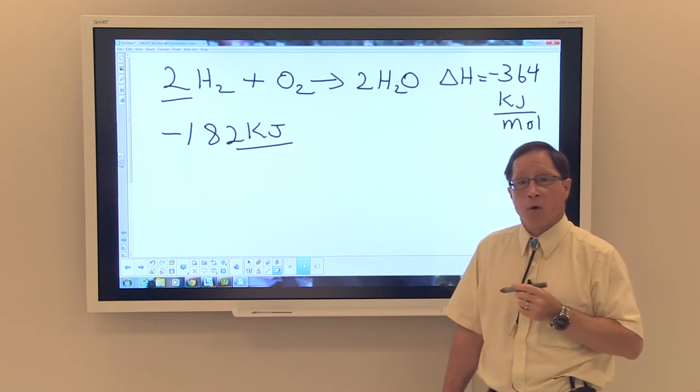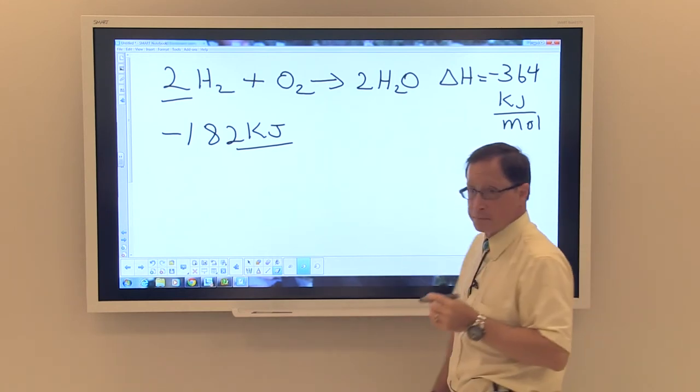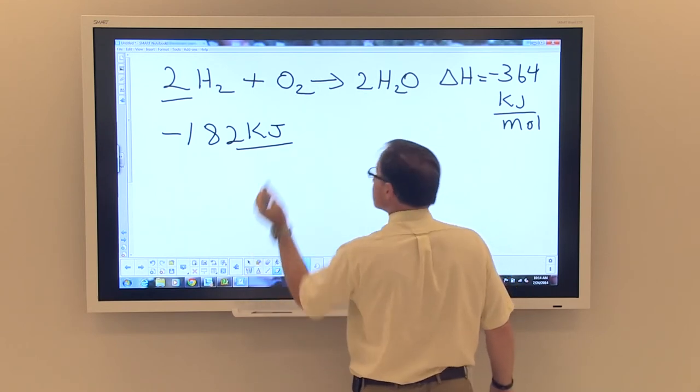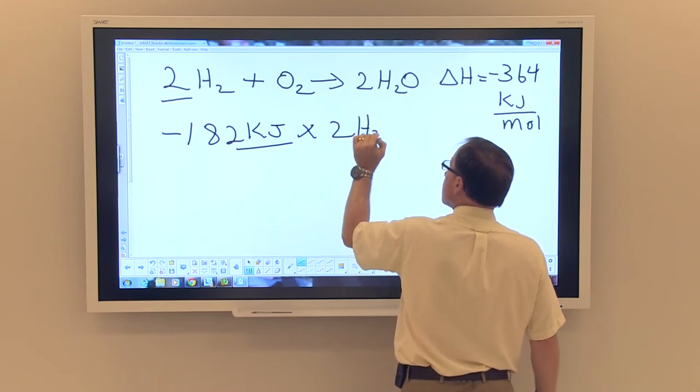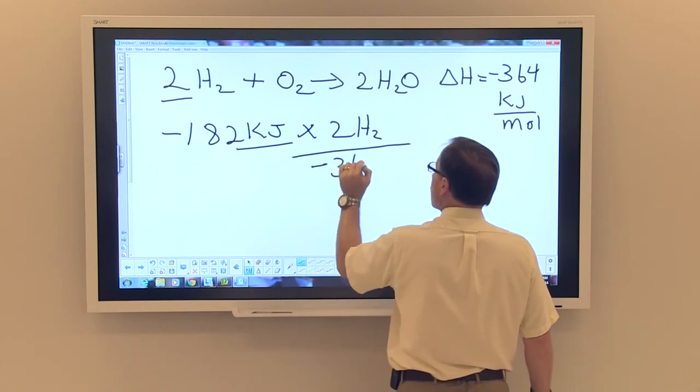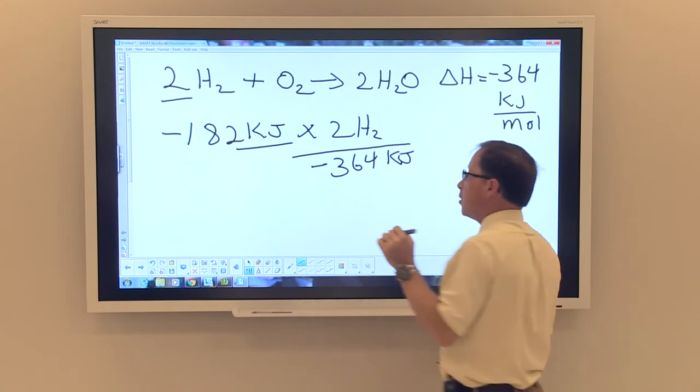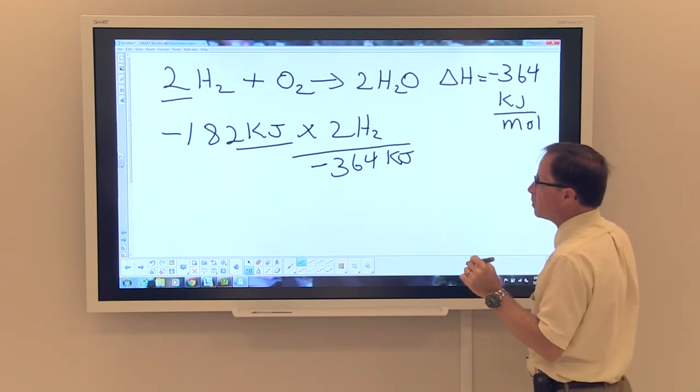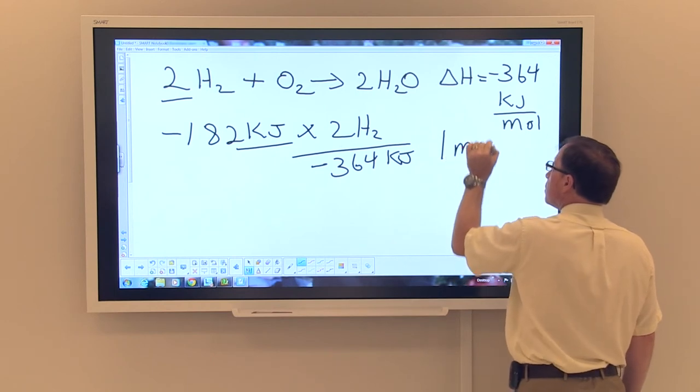And we were trying to determine how much hydrogen was reacted. We go back to our equation again and we say that there's two hydrogens for every 364 kilojoules of energy. In this instance then, it would mean that we would only react one mole of hydrogen.